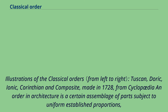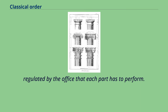Illustrations of the classical orders — Tuscan, Doric, Ionic, Corinthian, and Composite — made in 1728. From Cyclopédia: an order in architecture is a certain assemblage of parts subject to uniform established proportions, regulated by the office that each part has to perform.